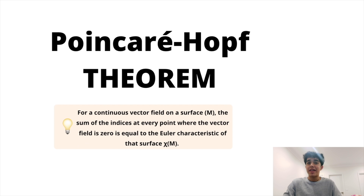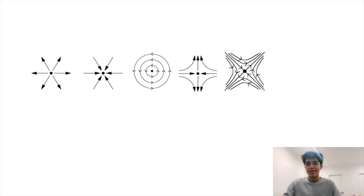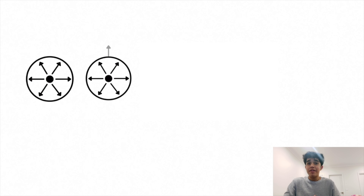This relates to the work of French mathematician Henri Poincaré and German mathematician Heinz Hopf, whose contributions led to the Poincaré-Hopf theorem. The theorem states that for a continuous vector field on a surface, the sum of the indices at every point where the vector field is zero equals the Euler characteristic of that surface. To understand this, we need to consider the different ways in which a vector field can be zero. Each such vector field has an index, otherwise known as a winding number.